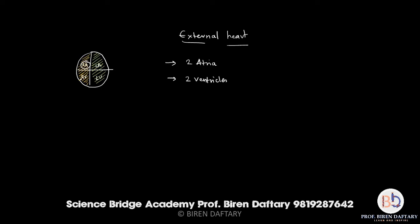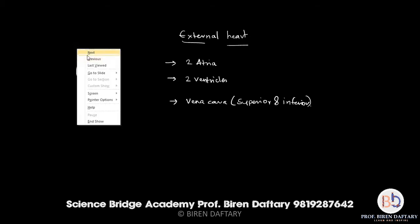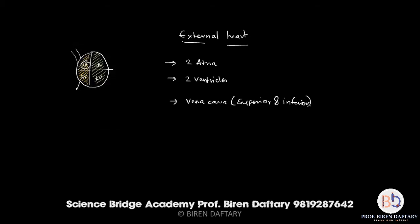The right atrium receives deoxygenated blood from blood vessels called the vena cava — there is a superior vena cava and an inferior vena cava. Both vessels bring deoxygenated blood from the body and open into the right atrium. There are also vessels called the coronary sinus, which is a collection of coronary veins that bring deoxygenated blood from the heart into the right atrium.